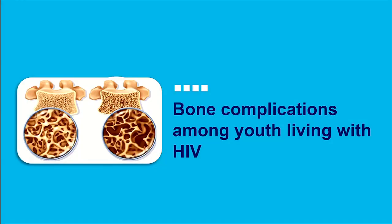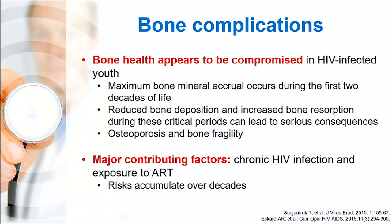For the first topic—bone complications among youth living with HIV—their bone health seems to be compromised compared to age- and sex-matched HIV-uninfected peers. The first two decades of life represent the period of maximum bone mineral accrual. If there is reduced bone deposition and increased bone resorption during this critical period, it can lead to serious consequences such as osteoporosis or bone fragility later in life.